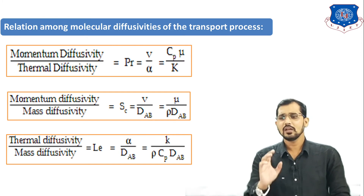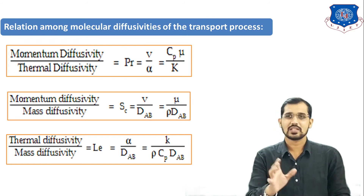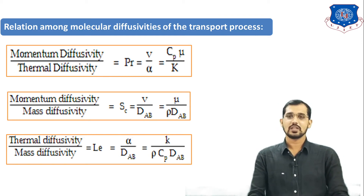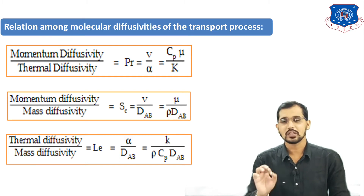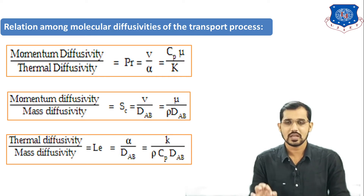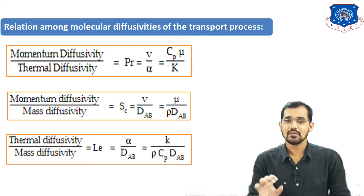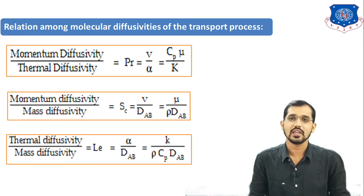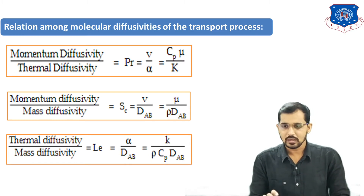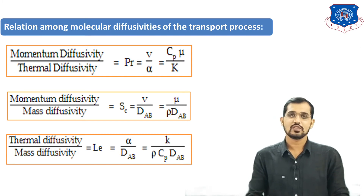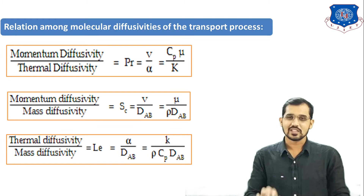The third relation is between heat transfer and mass transfer. The ratio of thermal diffusivity to mass diffusivity is known as the Lewis number Le, given by α/DAB = K/(ρCp·DAB), where K is thermal conductivity, ρ is density, Cp is heat capacity, and DAB is mass diffusivity of component A into B.